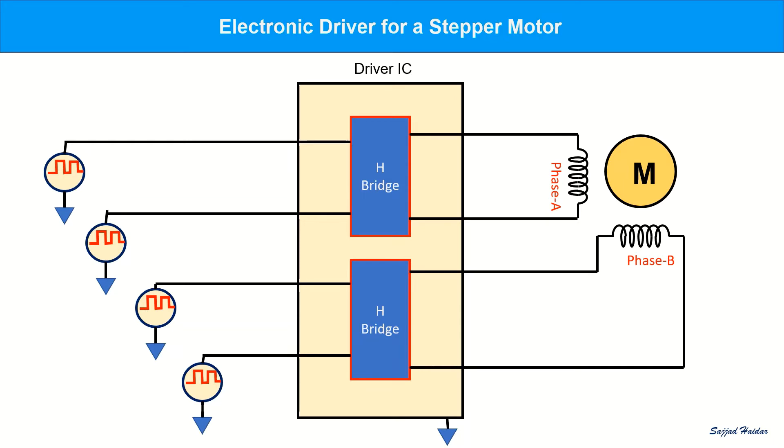To drive a bipolar stepper motor, we need two such H-bridges. One H-bridge for each coil. We can either use discrete component or an IC to drive a motor. One such popular IC, which has two H-bridges, is L298.